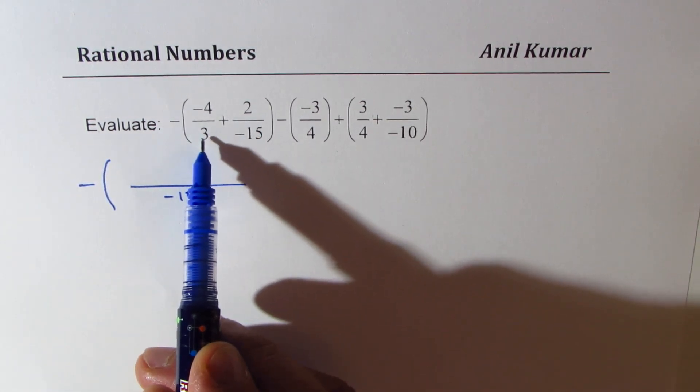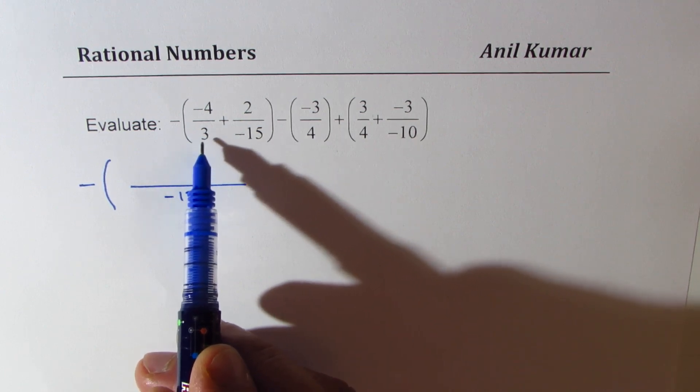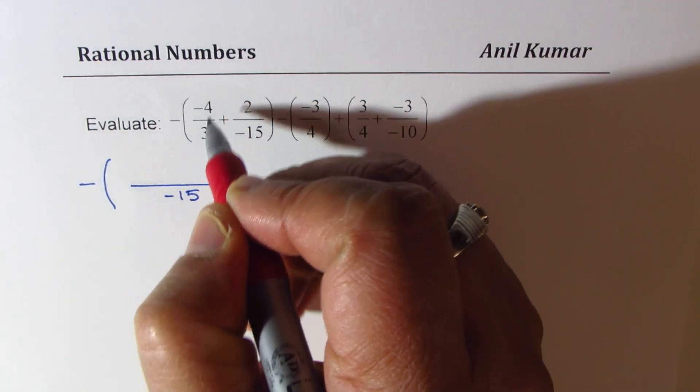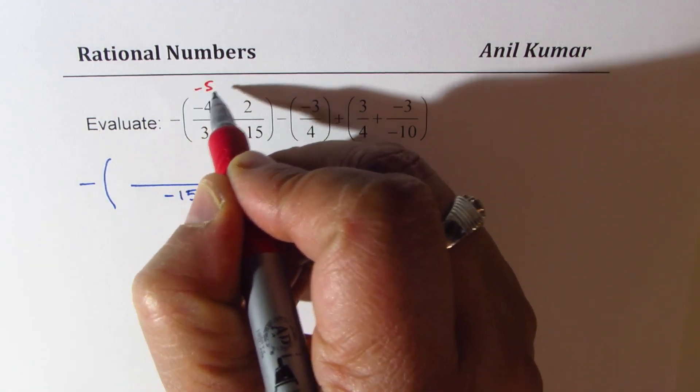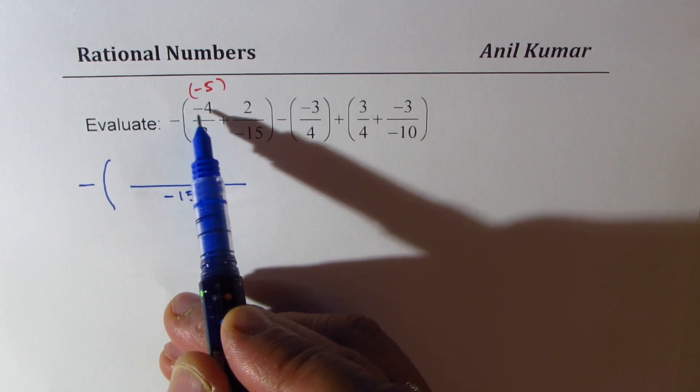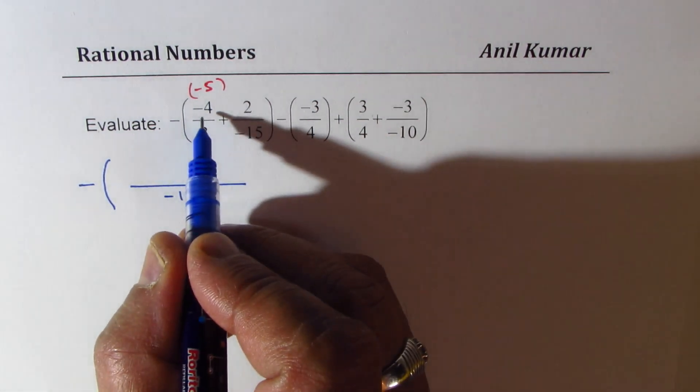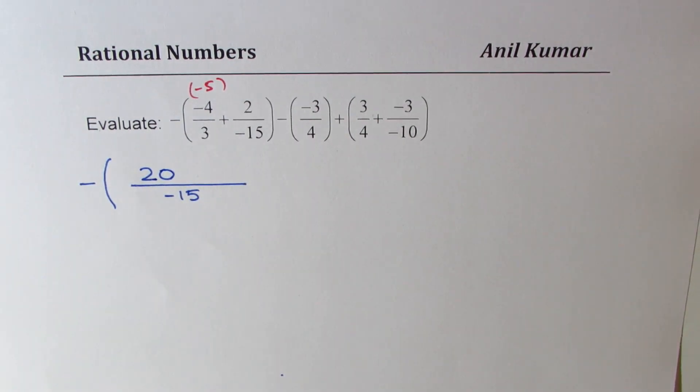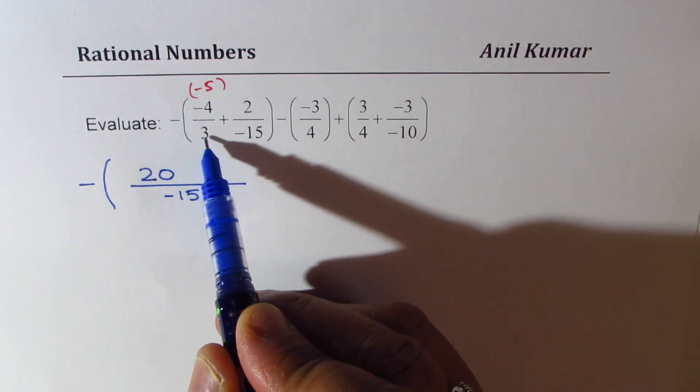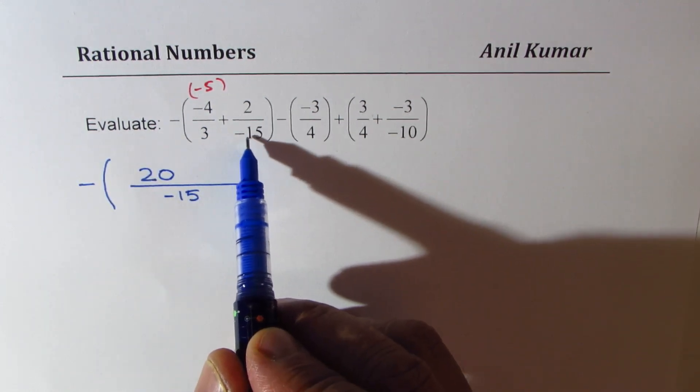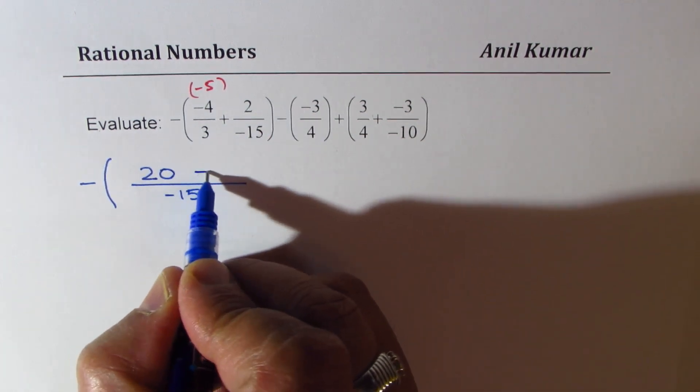Now, to make this minus 15, I have to multiply this by what? Minus 5, correct? So, to make this minus 15, I have to multiply both these terms by minus 5, both the terms. So, if I do minus 5 times minus 4, I get plus 20. So, we get plus 20 in the numerator, right?